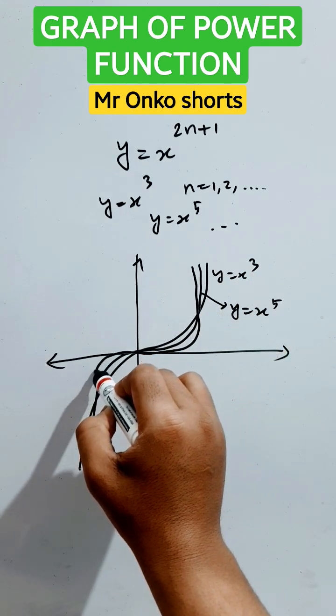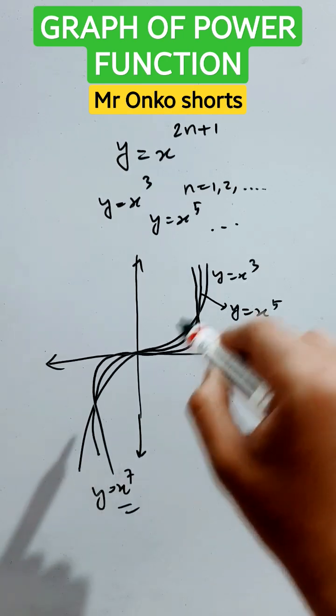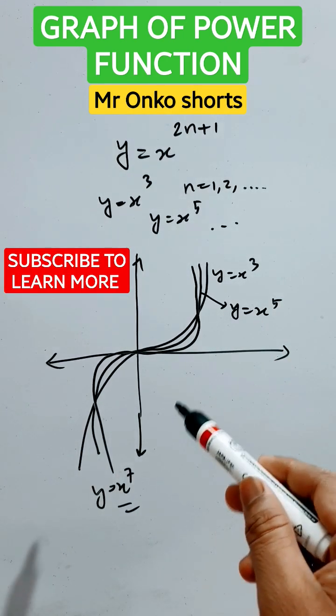be passing through this point, going here. It will be y equals to x to the power 7. Thus you can draw this type of graphs. Thank you, that's it.